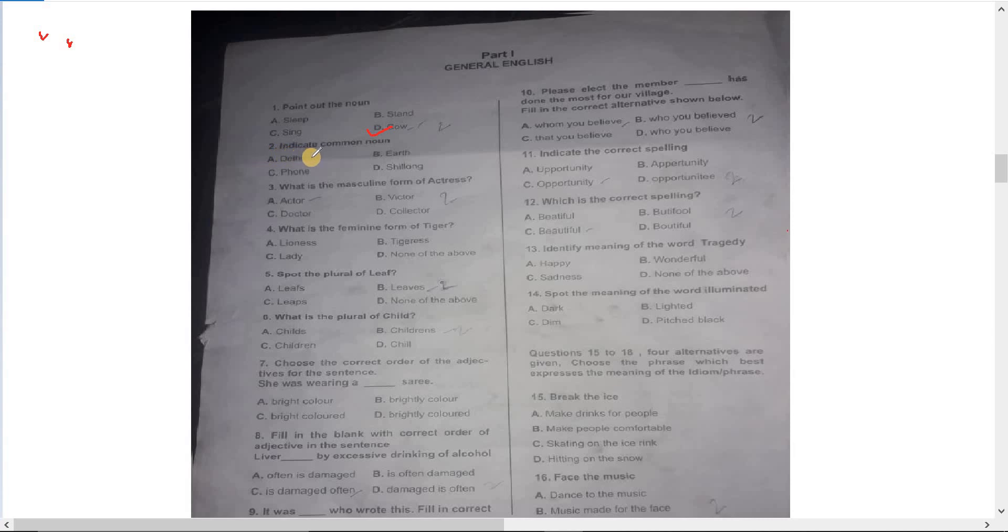Number two: indicate the common noun. Common nouns are general names. Earth and Shilong are proper nouns. Phone is a common noun - it refers to phones in general like Redmi, Realme, iPhone, or Samsung.